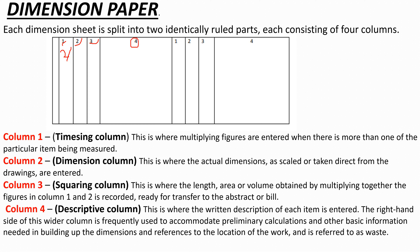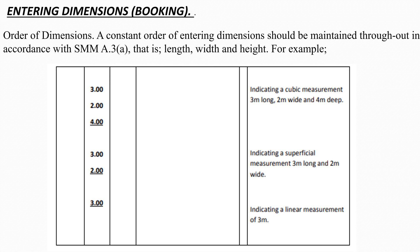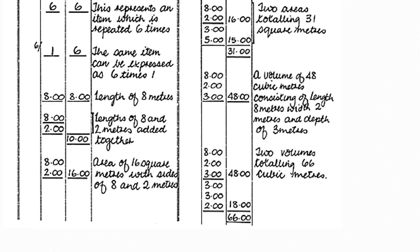When entering dimensions, this process is called booking. When booking, there is a specific order to follow. If you have cubic measurements, you start with length, then width, then depth — you cannot change this order. If you are measuring an area, you start with length then width. If you are measuring linear measurements, such as formwork, you just write the length and underline it.